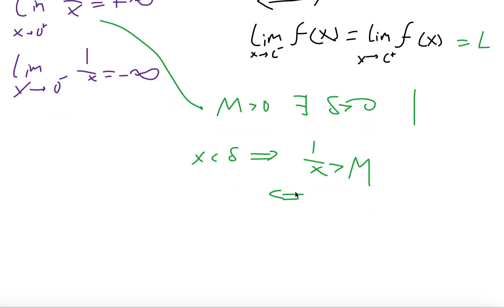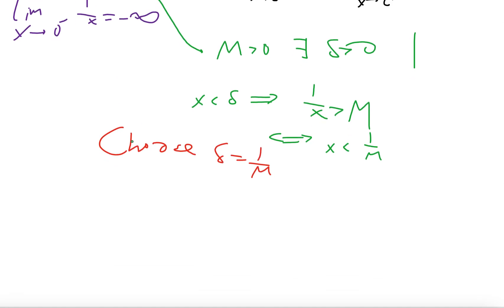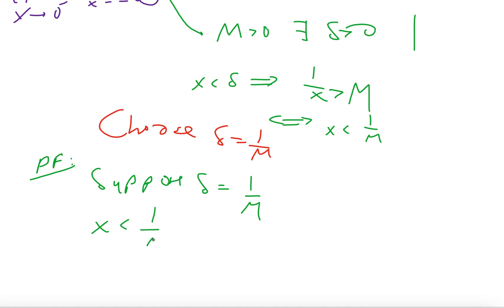If we take the inverse of both sides, we get x is going to be less than 1/M. Right away you see the connection between delta and 1/M. So if you choose delta equal to 1/M in the scratch work, then this assumption still holds. For the proof itself, suppose that delta equals 1/M. Then by this definition, you have x less than 1/M, and that immediately implies 1/x is greater than M. You're done.